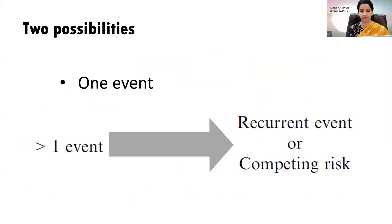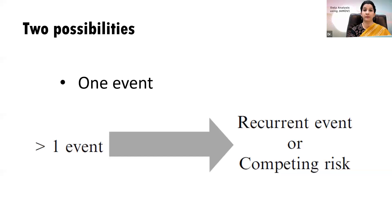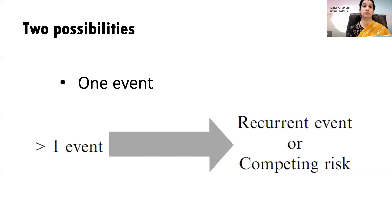There can be one event or more than one event. When there is more than one event, we call it a recurrent event or competing risk. For example, if measuring death due to cardiovascular disease in hypertensive people, but someone dies from cancer or a road traffic accident, that is a competing risk. In Kaplan-Meier analysis, we assume there is no competing risk, because for such risks a different analysis is required.